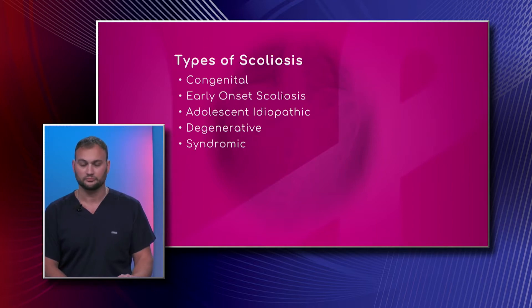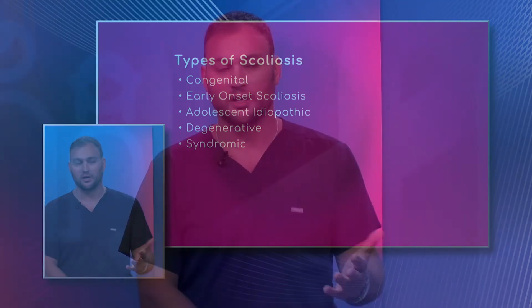Syndromic scoliosis goes along with the other types — you're looking for associated features. A pediatrician may lift the shirt of a child to look for what we call café au lait spots, or darkened spots, which are significant for neurofibromatosis. Reflexes should also be checked, because there are some tumors that can occur inside the canal that can lead to scoliosis as well. It's important to address those with a pediatrician.